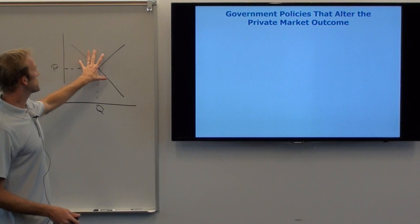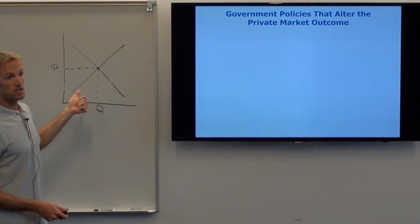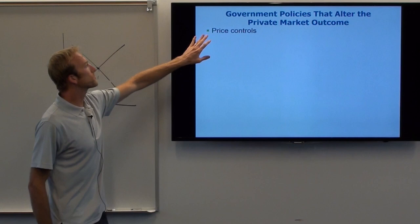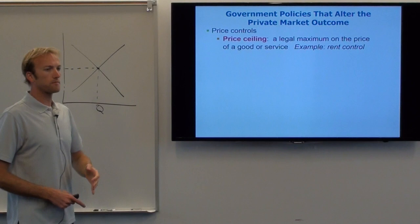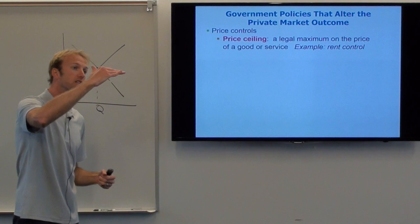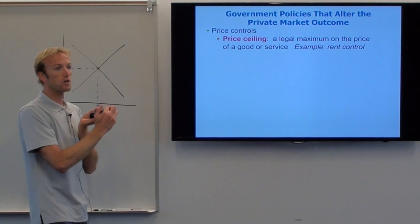This is in the absence of government interference. We're going to talk about the three ways governments can change this outcome. The first thing they can do is price controls, and there are two types. The first is a price ceiling — this is exactly what it sounds like. The government says there's a ceiling on the price; you cannot charge above this price. That's called a price ceiling.